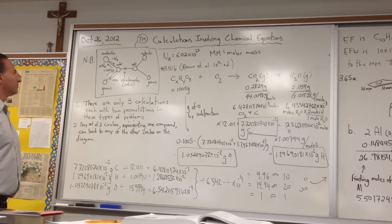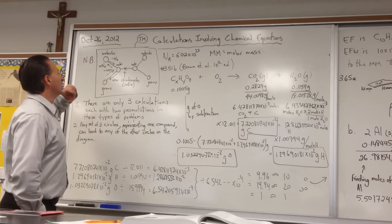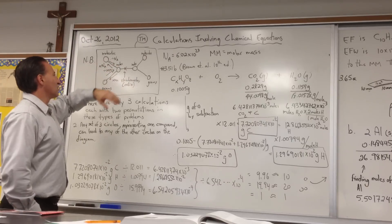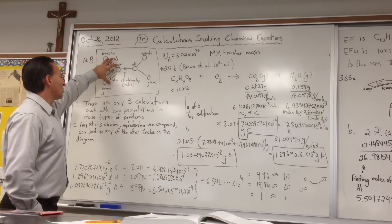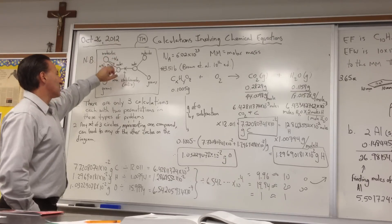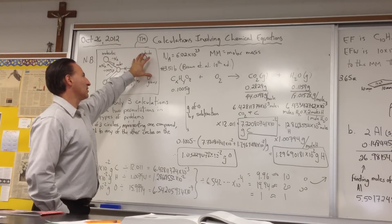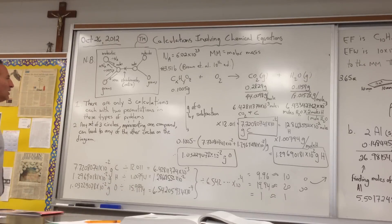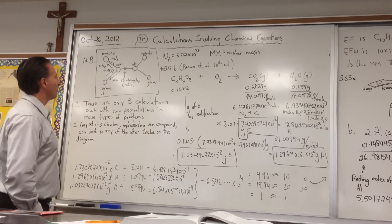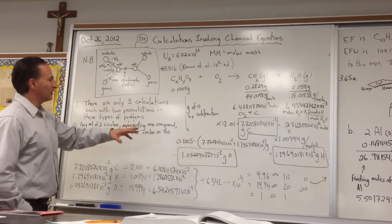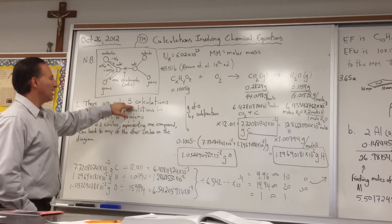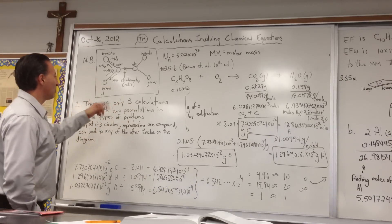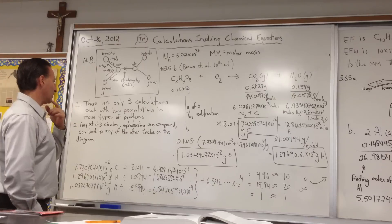Before we do that, I just want to recap how we do these types of problems. I've drawn a little diagram with six circles in it. These three circles represent one substance and these three circles represent another substance within any balanced chemical equation. There are only three basic calculations, each with two permutations because you can go one way or the other way in the same calculation.